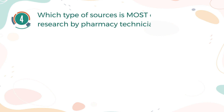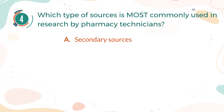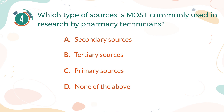Number 4. Which type of source is most commonly used in research by pharmacy technicians? A. Secondary sources. B. Tertiary sources. C. Primary sources. D. None of the above.